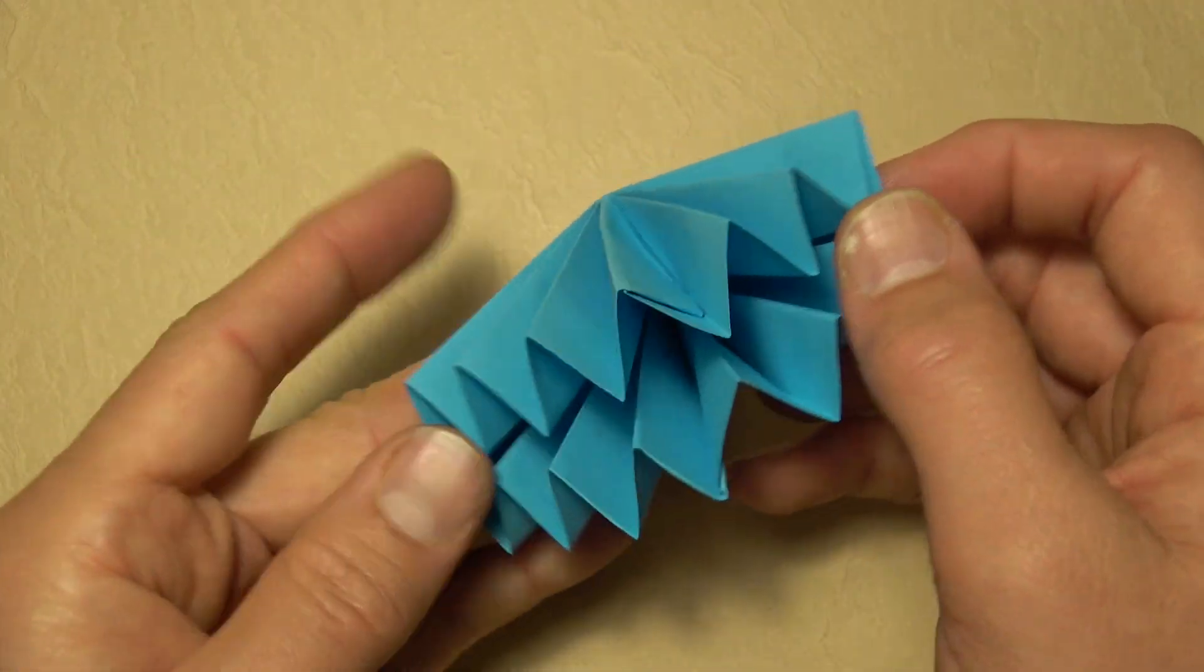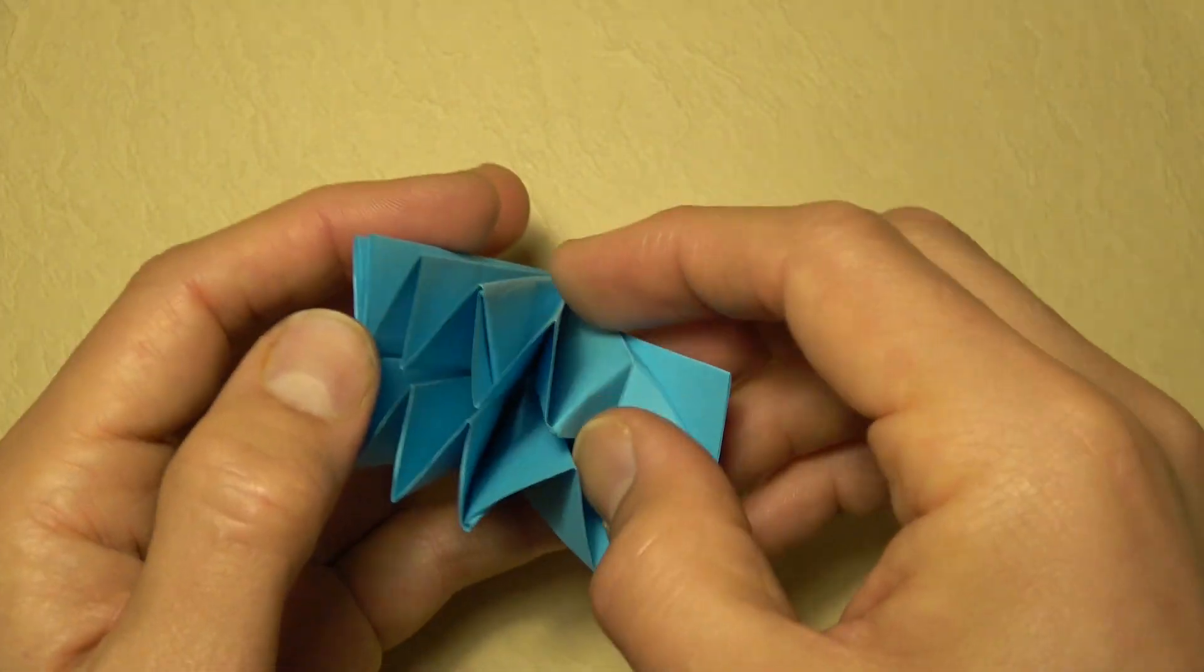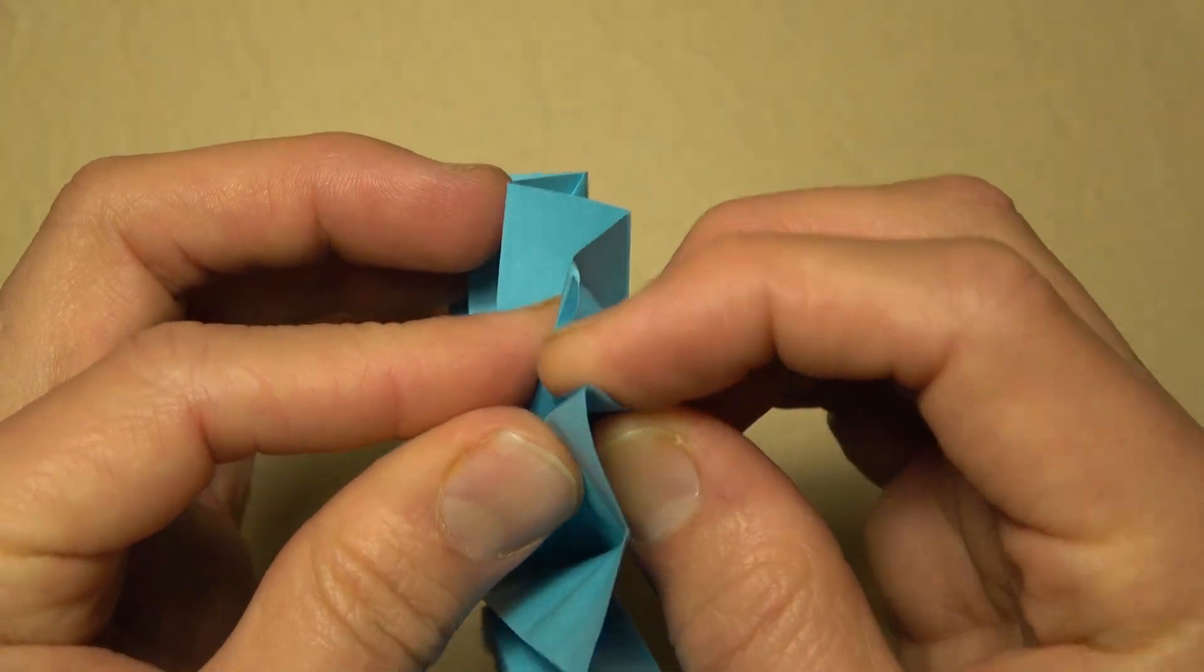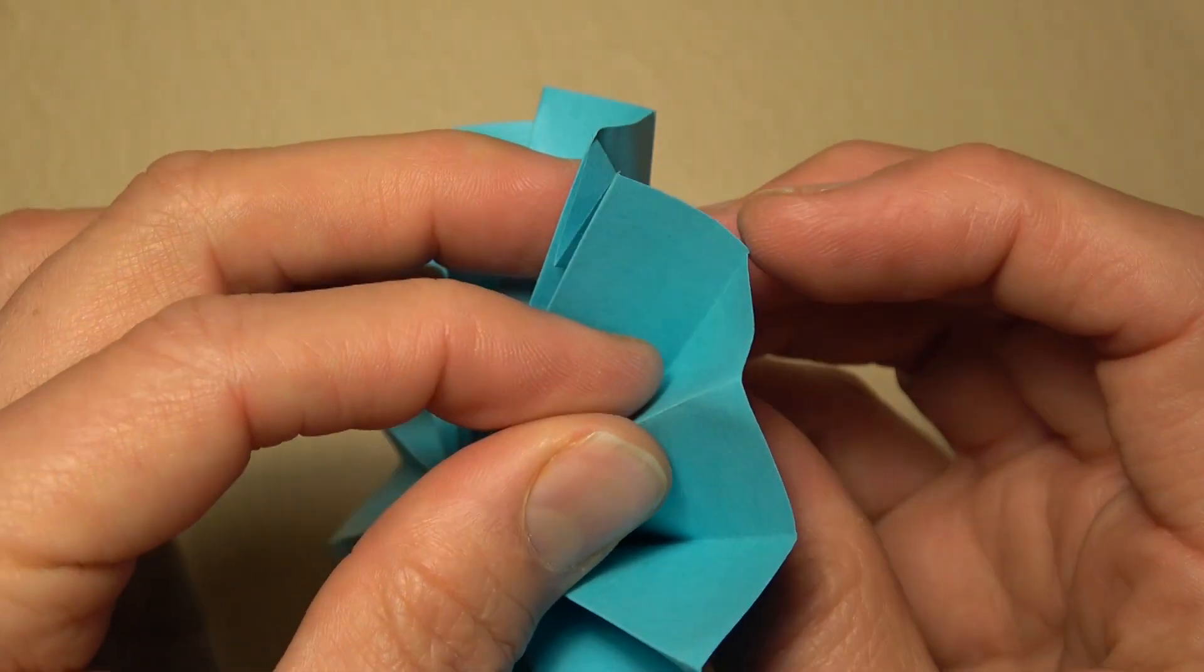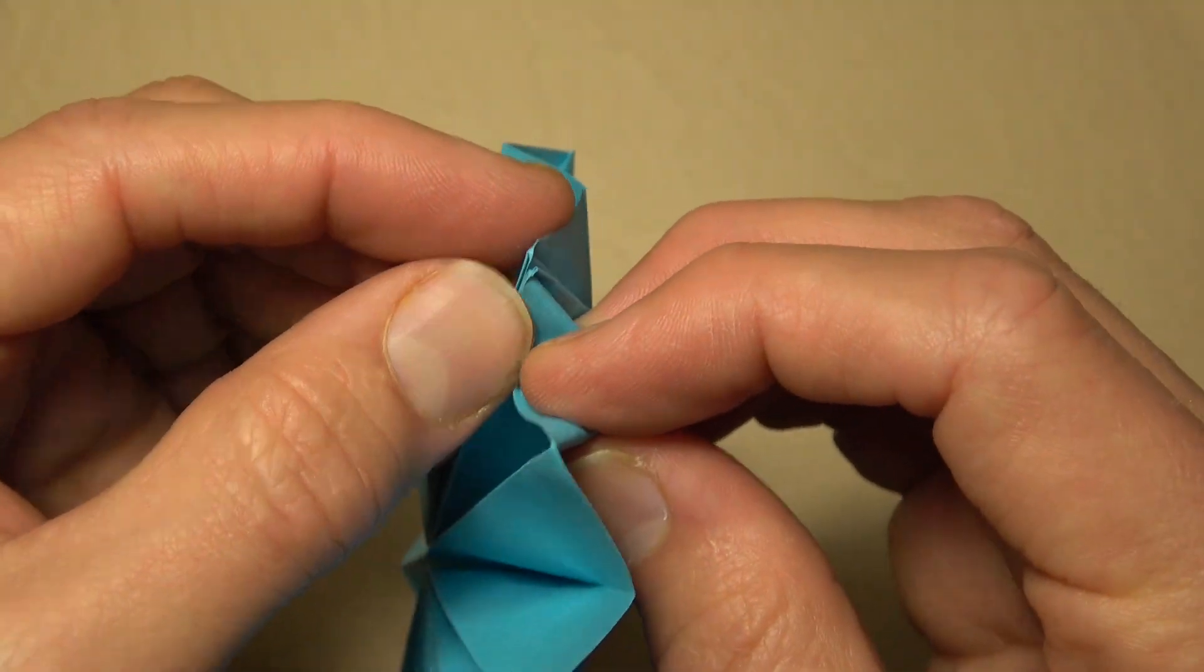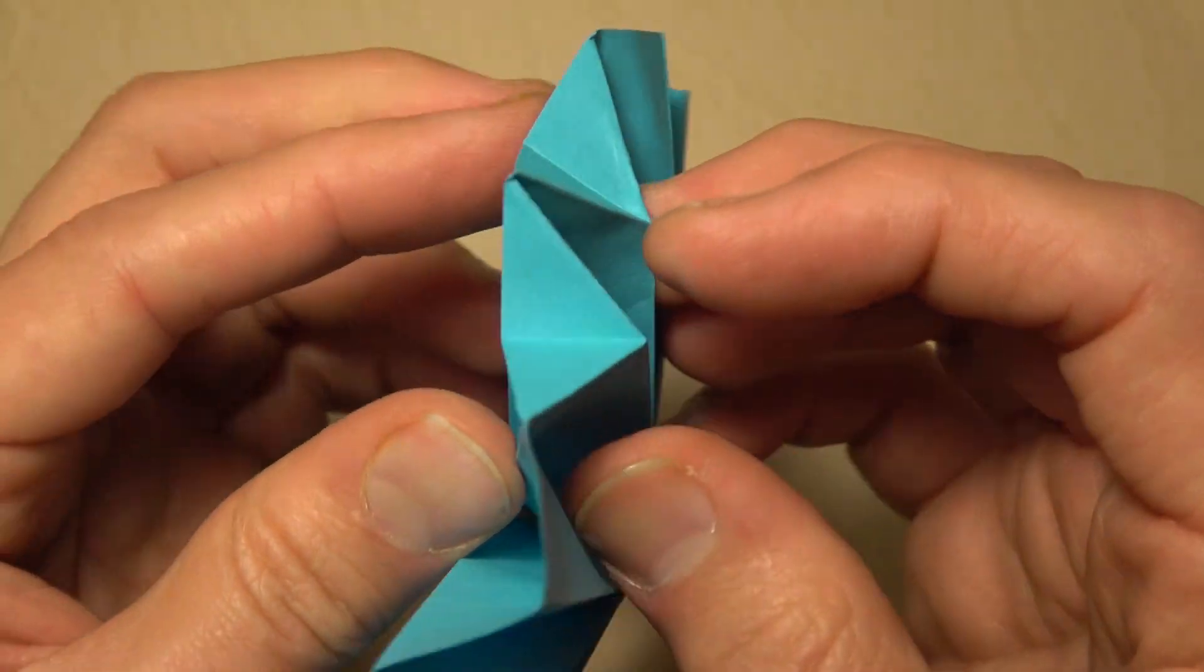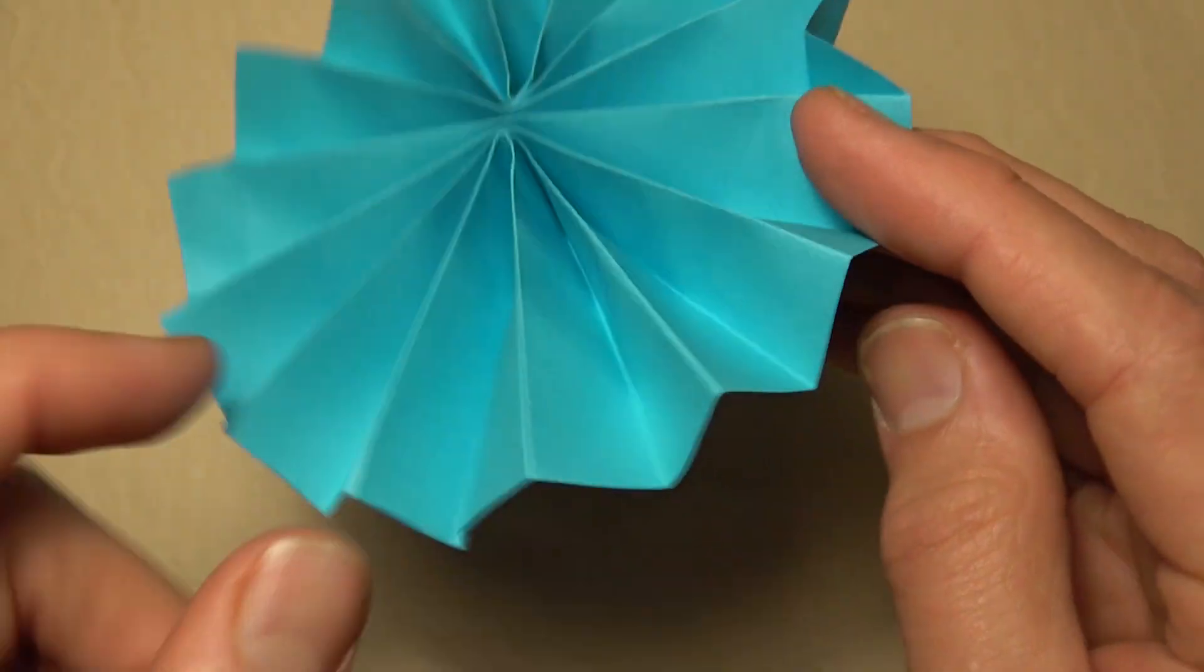So you could close it up like this. And then make the reverse folds like this. That might be easier to do. But you could also just do it while the rosette is popped up. And just go around like this. Making the reverse folds. So to make a reverse fold. What you want to do is just push in this corner. And you want this edge to align with this edge. And this edge aligns with this edge. And then flatten. So it's like that. And we're just going to go all the way around. Making the reverse folds like that.